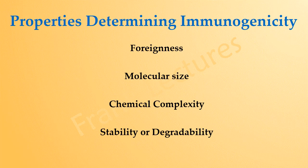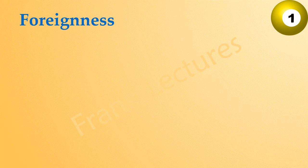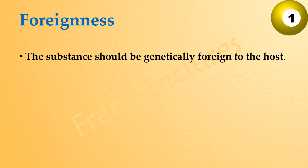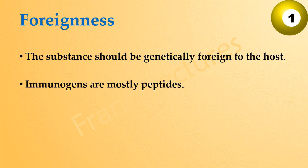Let's discuss them one by one. Foreignness: by the term foreign we mean non-self. Our immune system is able to distinguish between self and non-self. To be immunogenic, the substance should be genetically foreign to the host — it should be different from the host's own substances. As we know, immunogens are mostly peptides or proteins in chemical composition. If the peptide of an immunogen is of similar nature to the peptides of the host organism, there will be no immune response against the antigen.